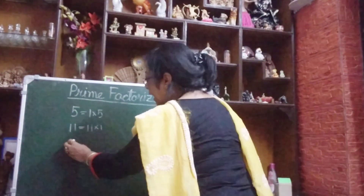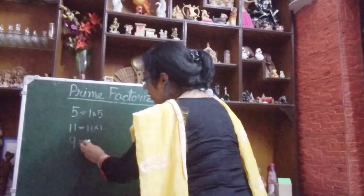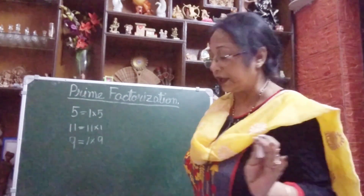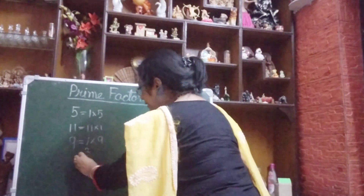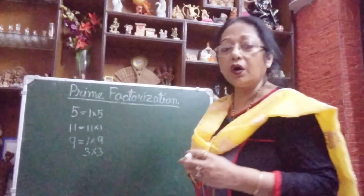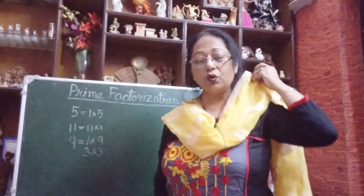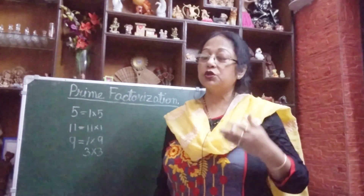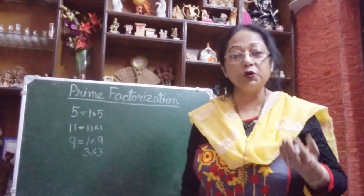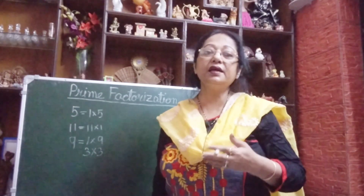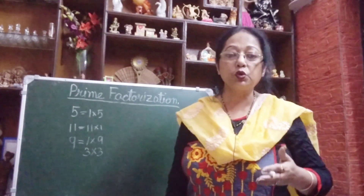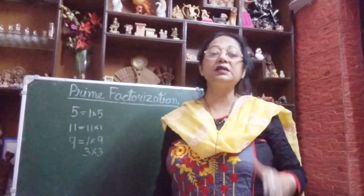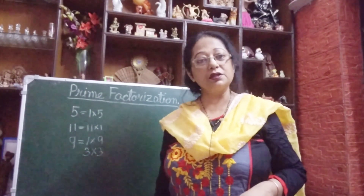Now you see composite numbers — I am writing 9. How can I write 9? We can definitely write 1 times 9 equals 9, so 1 and 9 are factors of 9. Again we can write 3 times 3 equals 9 also. So how many factors does 9 have? Not 2 factors — 3 factors: 1, 3, and 9 — more than 2 factors. So 9 is a composite number. This way 10 is also a composite number, 11 is a prime number, and 12 is a composite number. So this way we can divide all numbers into two groups: prime numbers and composite numbers.